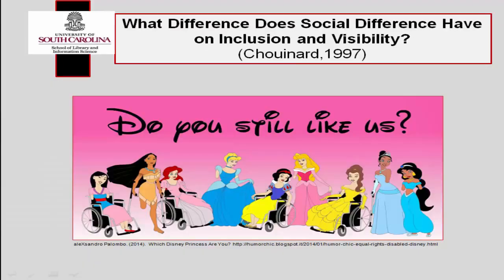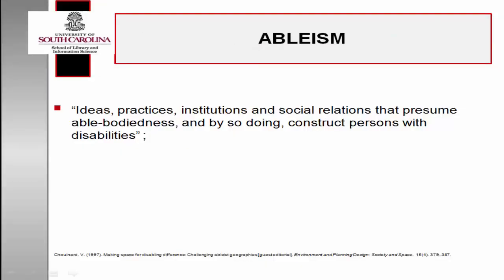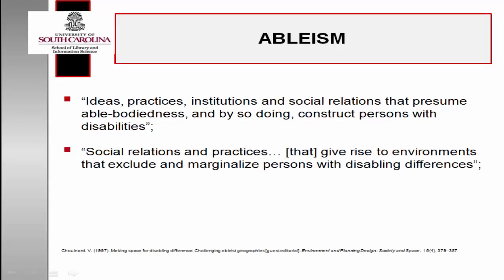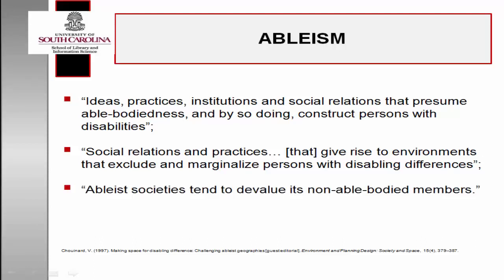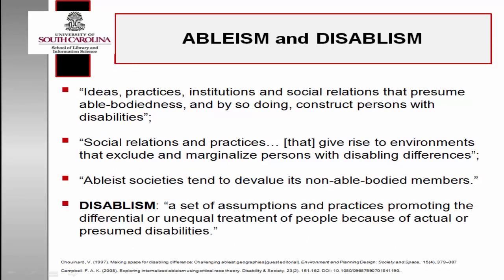Vera Schwenard, Professor of Geography and Critical Scholar on the Geographies of Disability, and Fiona Kumari Campbell, Professor of Disability Studies, have defined ableism and disableism. Schwenard defined ableism as ideas, practices, institutions, and social relations that presume able-bodiedness and by so doing construct persons with disabilities, giving rise to environments that exclude and marginalize persons with disabling differences. An ableist society tends to devalue its non-able-bodied members. Campbell defined disableism as a set of assumptions and practices promoting the differential or unequal treatment of people because of actual or presumed disabilities.